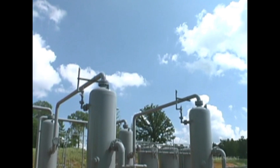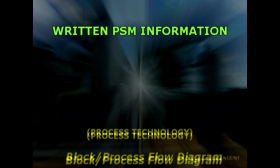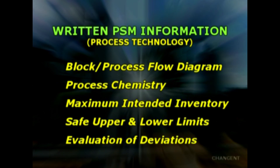Information on the technology of the process must include at least the following: a block flow diagram or simplified process flow diagram, process chemistry, maximum intended inventory, safe upper and lower limits for items such as temperatures, pressures, flows, or compositions, and an evaluation of the consequences of deviations, including those affecting the safety and health of employees.